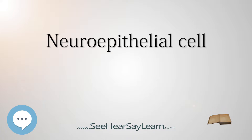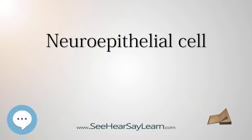The neural tube begins as a single layer of pseudo-stratified epithelial cells, but rapid proliferation of neuroepithelial cells creates additional layers and eventually three distinct regions of growth. As these additional layers form, the apical basal polarity must be downregulated. Further proliferation of the cells in these regions gives rise to three distinct areas of the brain: the forebrain, midbrain, and hindbrain. The neural plate itself eventually gives rise to the spinal cord.